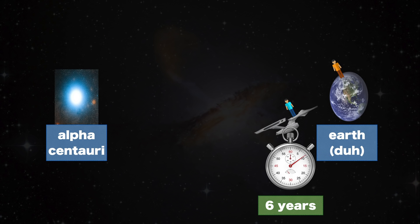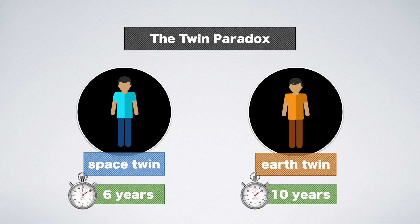Or six years for the entire trip. On Space Twin's clock, only six years of time will have passed upon his return to Earth. Boom, solved.